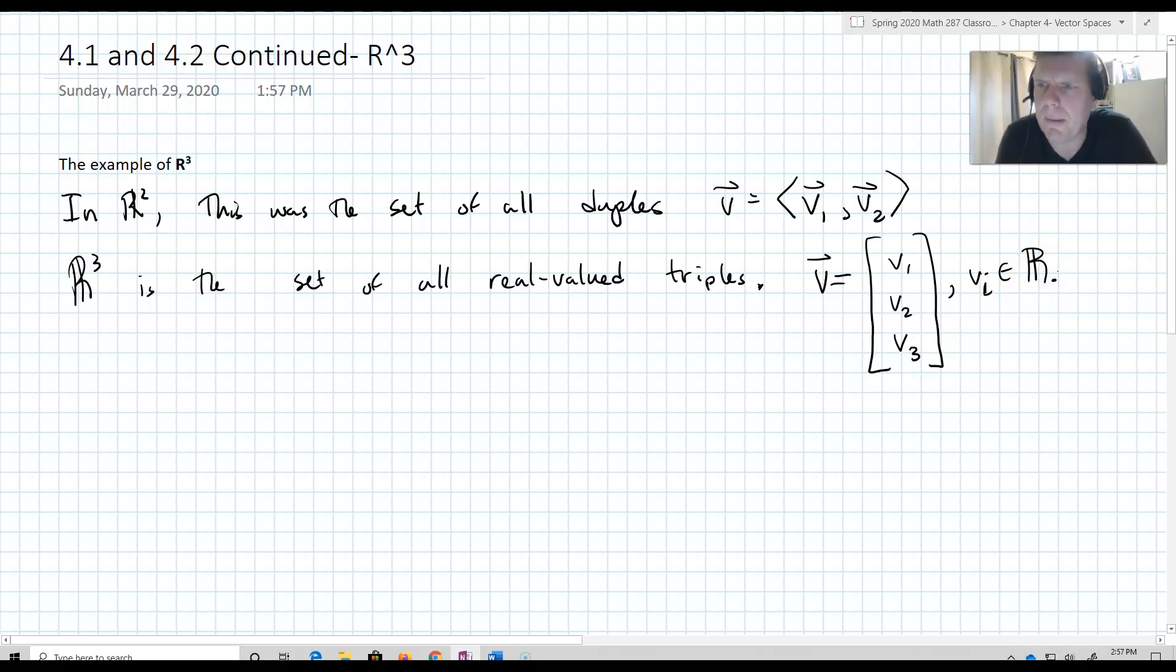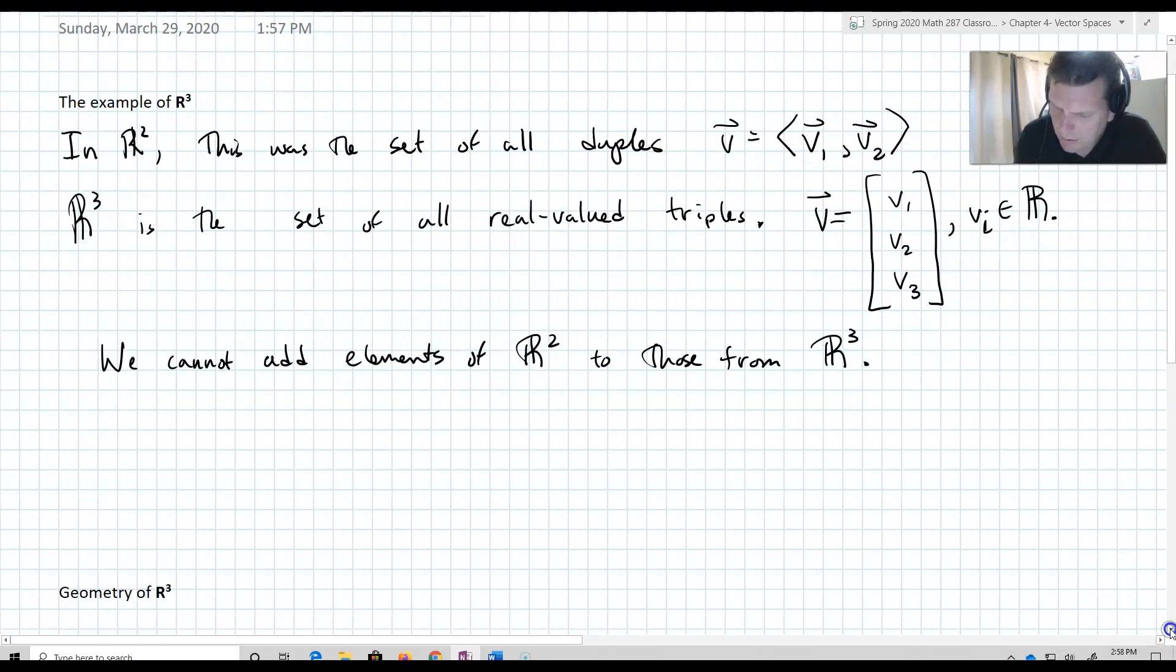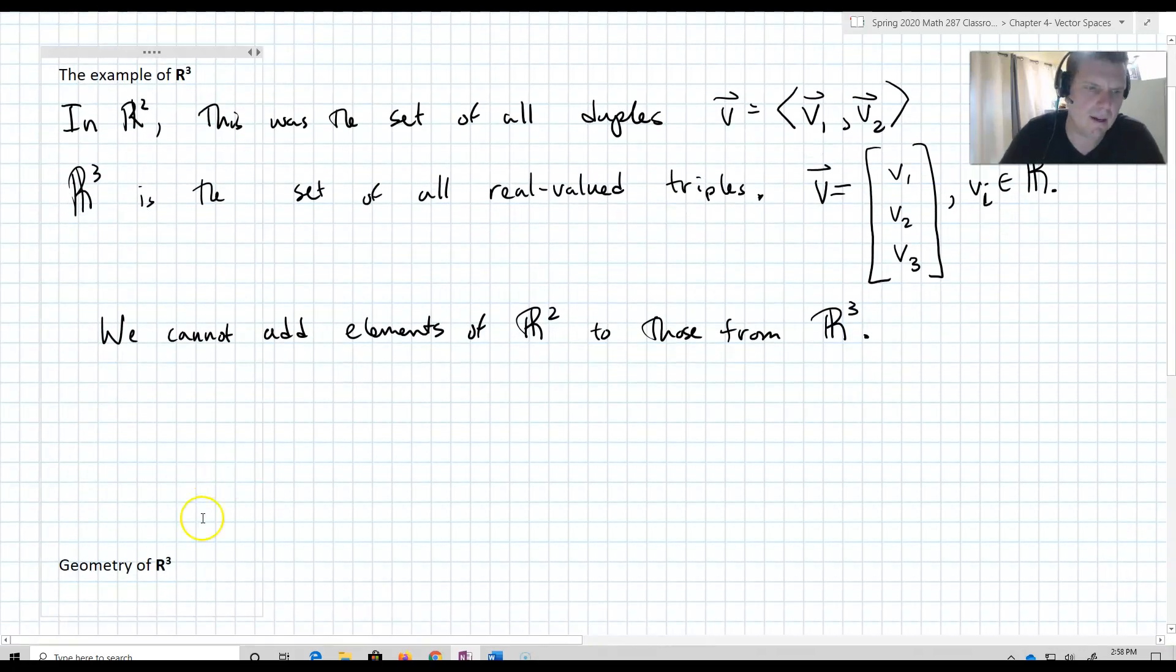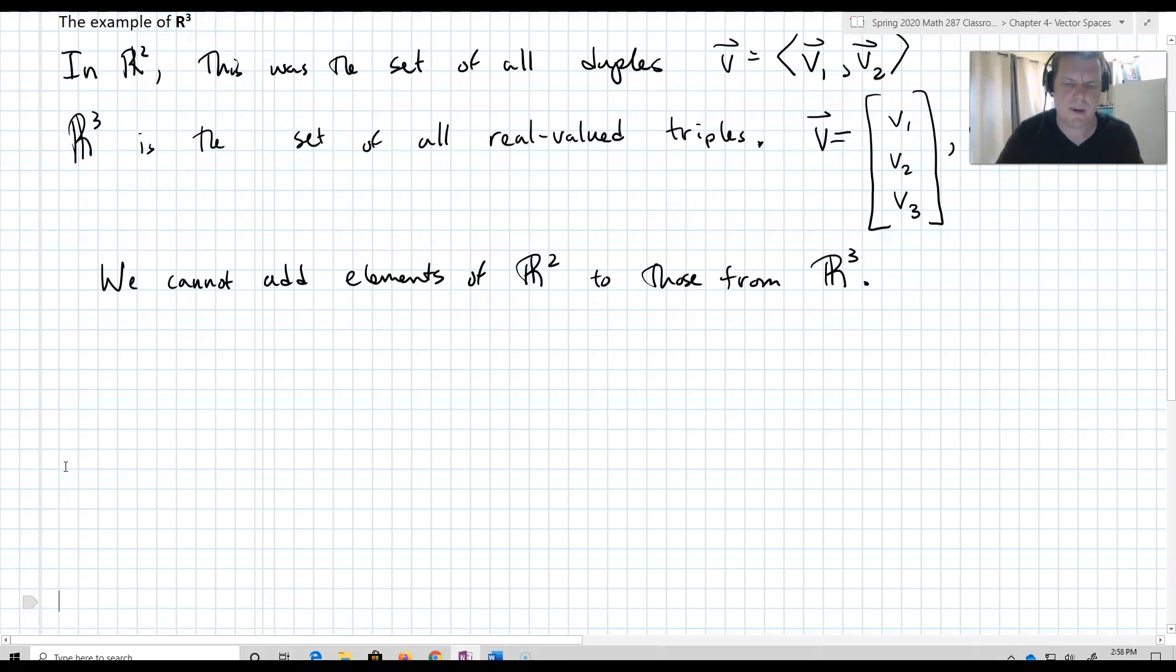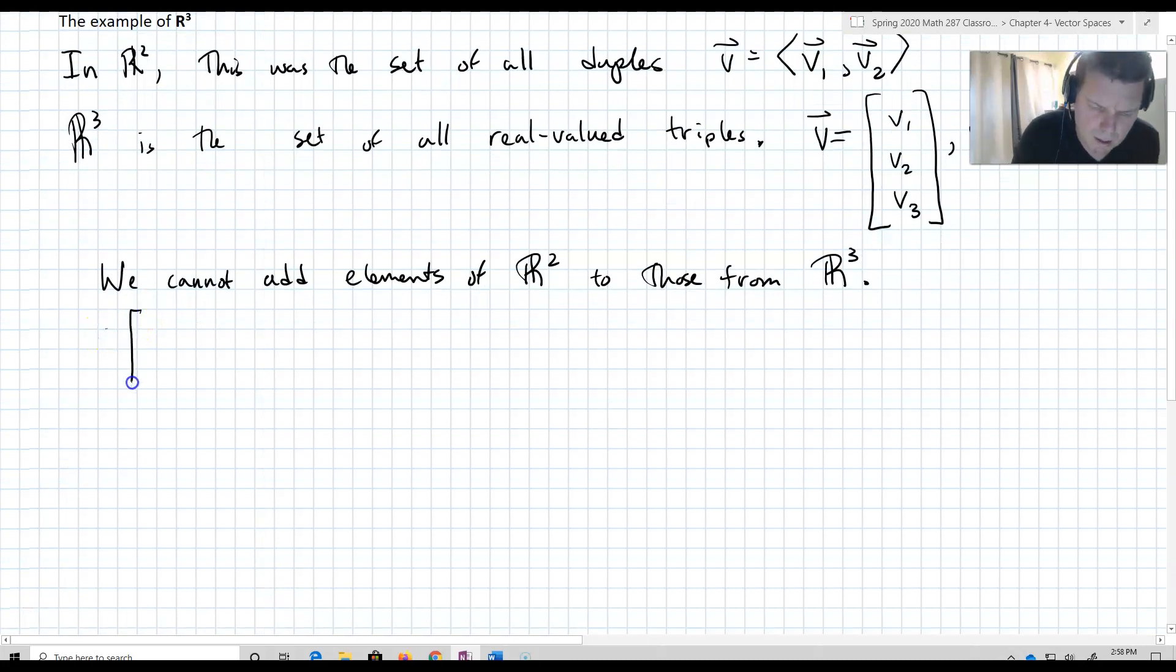We're going to talk quite a bit about the geometry and geometry of subspaces, but one thing to get here is that we cannot add elements of R² to those from R³. So, what we mean by that is something along the lines of this. Take V1, V2, V3, and we'll add that to plus U1, U2.